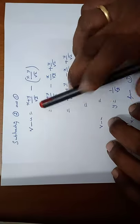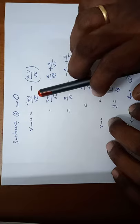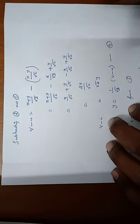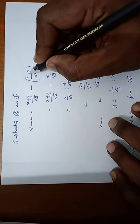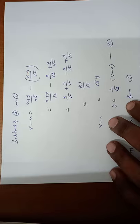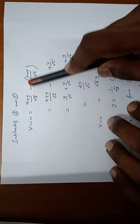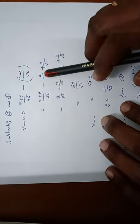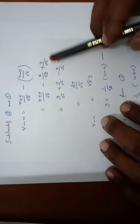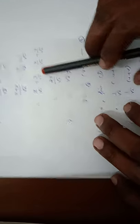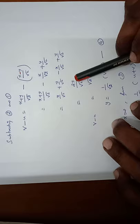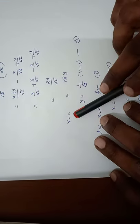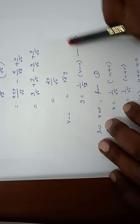Subtracting equation 1 from equation 2: v minus u equals x plus y by root 2 minus x minus y by root 2. The x terms cancel, leaving 2y by root 2, which equals root 2 times y. Therefore y equals 1 by root 2 into v minus u — this is equation number 4.